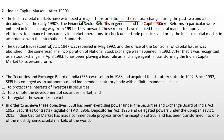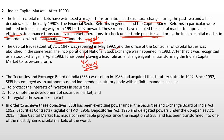Financial sector reforms in general, and capital market reforms in particular, were initiated in a big way from 1991-92 onwards. This improved efficiency in the capital market, increased transparency, curbed unfair trade practices, and enabled the Indian capital market to meet international standards. The Capital Issue Control Act 1947 was repealed in May 1992, and the Office of the Controller of Capital Issues was abolished in the same year.